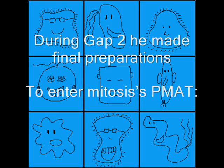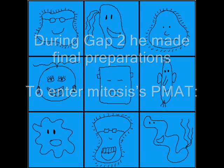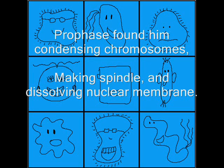During Gap 2 he made final preparations to enter mitosis's PMAT. Prophase found him condensing chromosomes, making spindle and dissolving nuclear membrane.